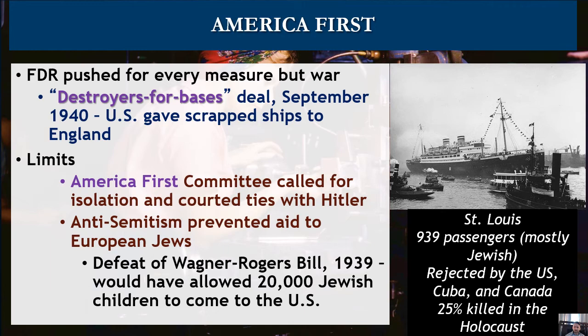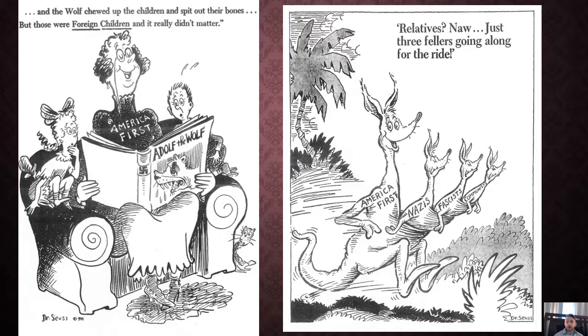One of the saddest cases is the St. Louis, a passenger ship with 939 passengers, most of them Jews. They tried to land in Cuba, the U.S., and Canada, and were rejected, largely in all three locations. The ship had to return to Europe, and about a quarter of them were killed in the Holocaust. So America and other countries actively denied help to people who needed it.